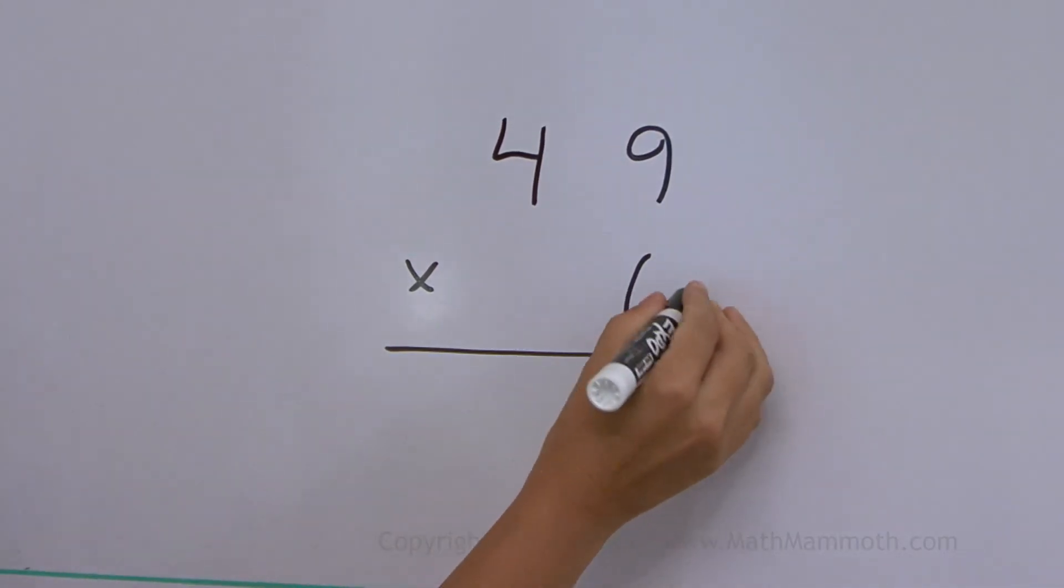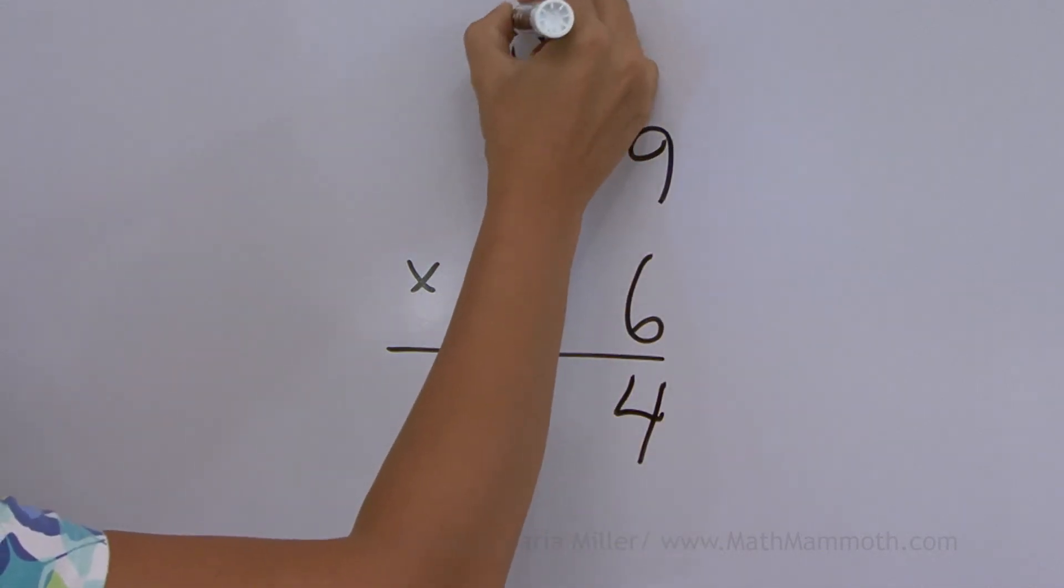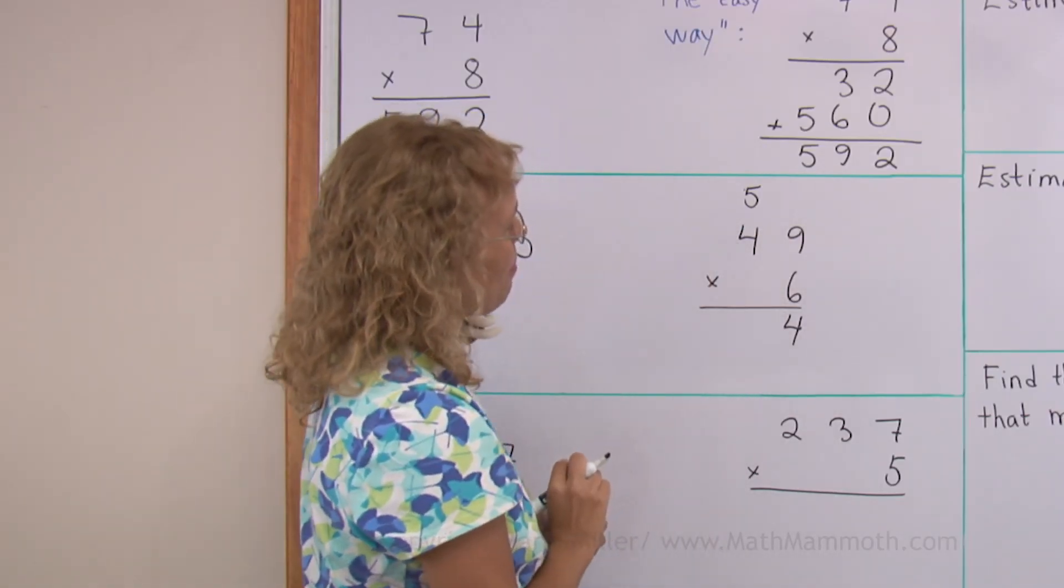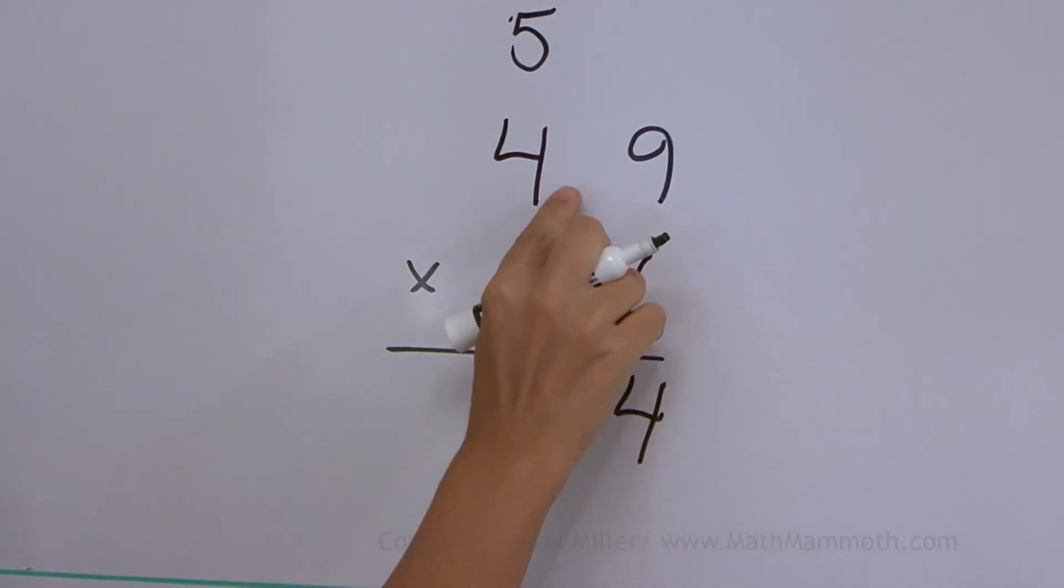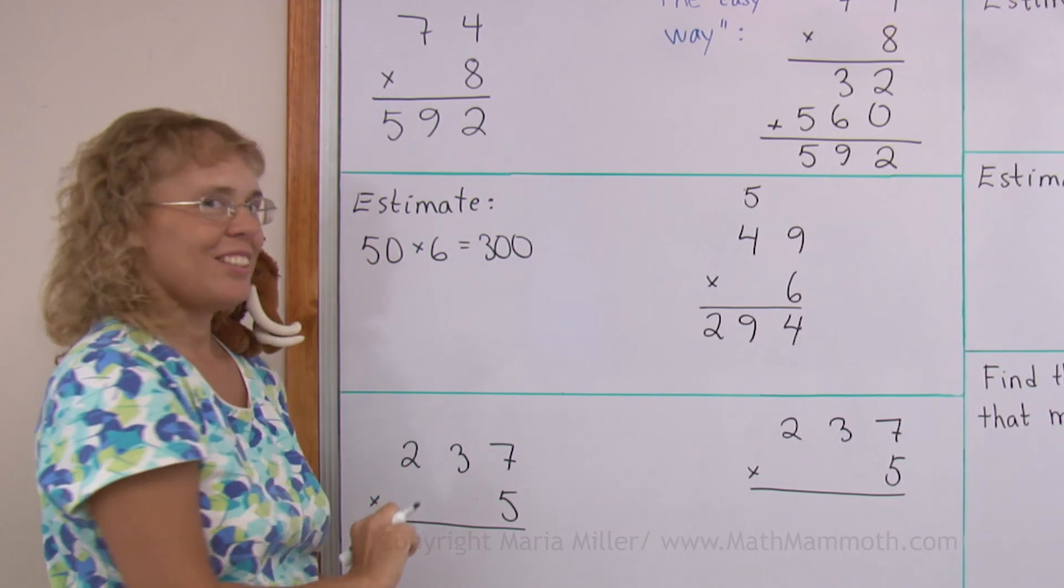Then over here. 6 times 9, 54. I write 4 here and the 50, the 5 tens, are regrouped or carried over here in the tens column. Then the tens, 6 times 4, plus 5. So we get 24 plus 5, 29. Well done. And yes, it is close to 300.